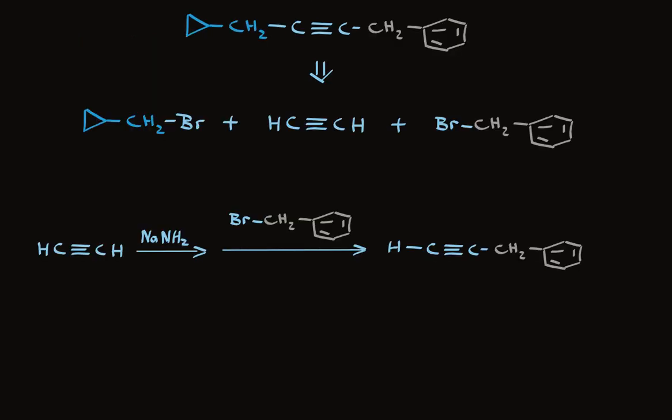First, we'll treat with sodium amide and then the tan alkyl bromide a compound called benzyl bromide. In the second step we use sodium amide again and the other alkyl bromide. We've made exactly the same target. The order of alkylation is immaterial.